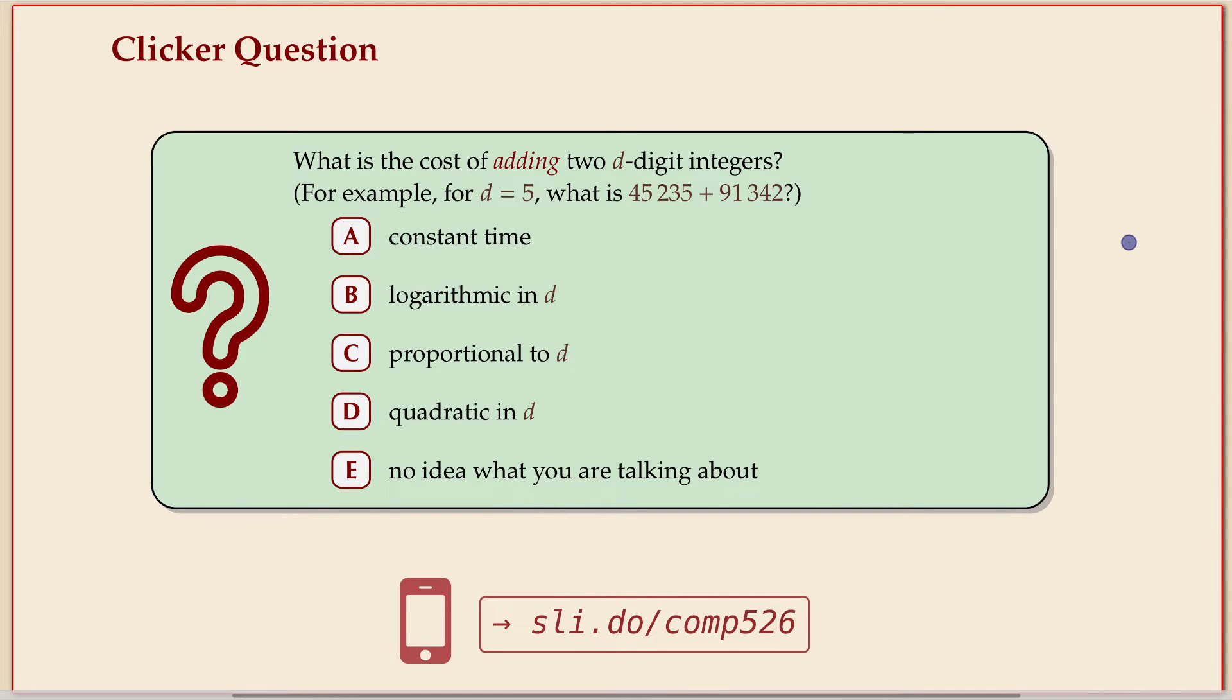To motivate some of the complications I'm about to mention, let's do this little question, essentially jumping ahead of ourselves. This is already talking in terms of asymptotic costs. What's the cost of adding two integers?